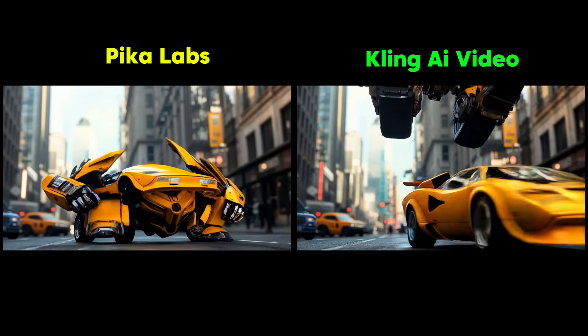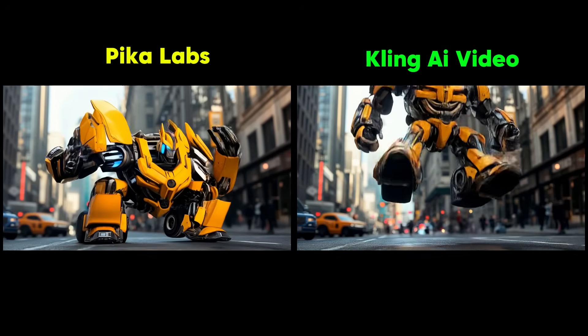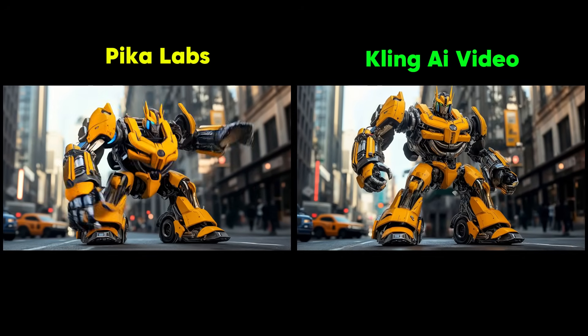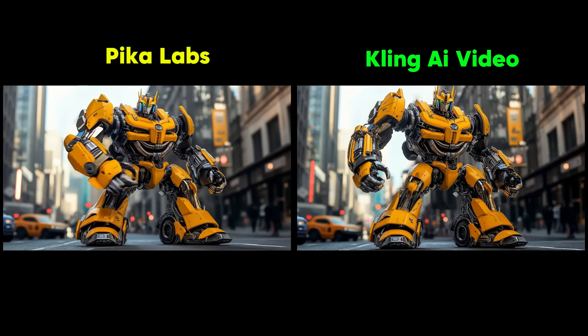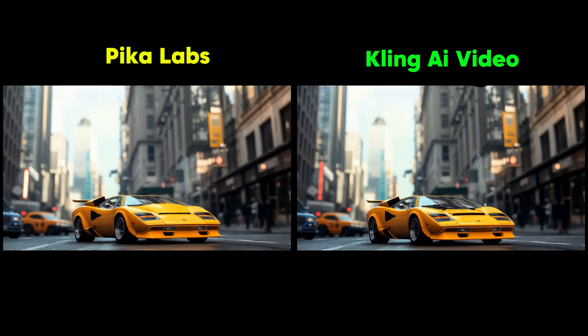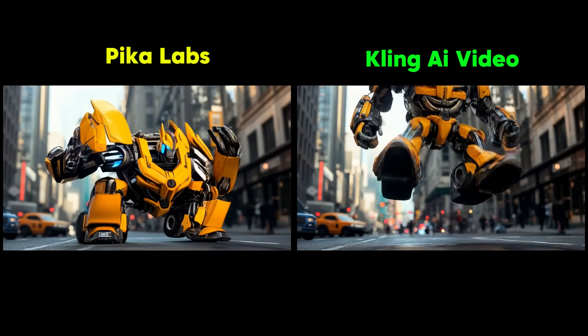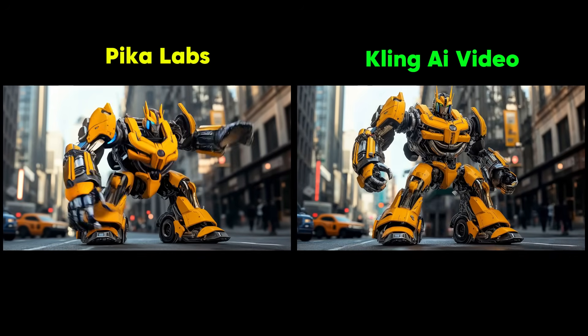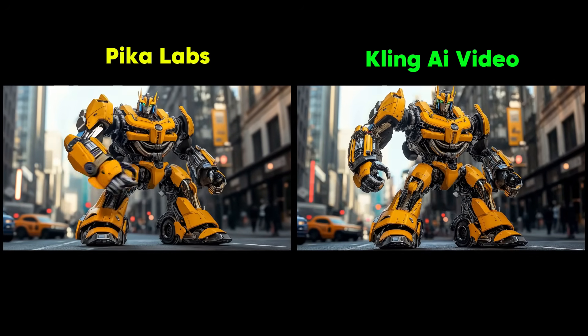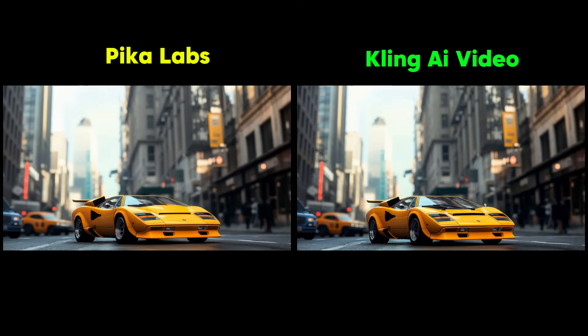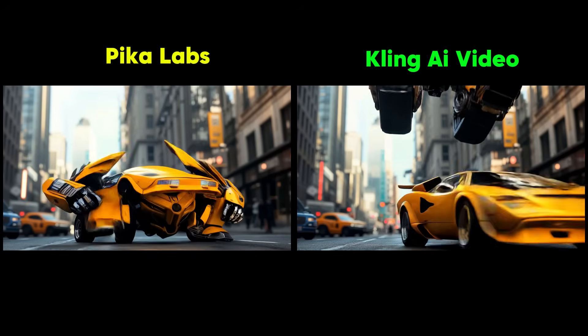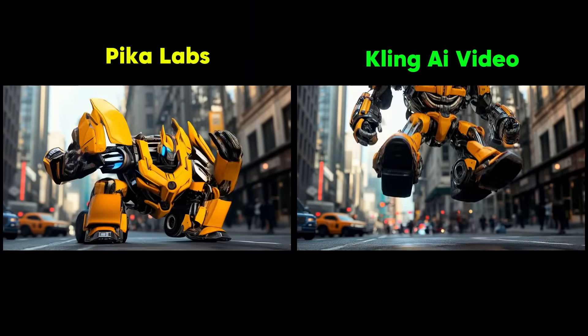Here's a comparison with what I get when trying the same thing in the Kling video generator. Pika does have more creativity when it comes to this keyframes feature, while Kling kind of avoids it, just dropping in the robot from the sky.